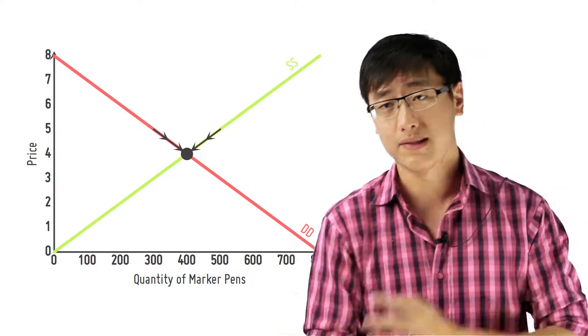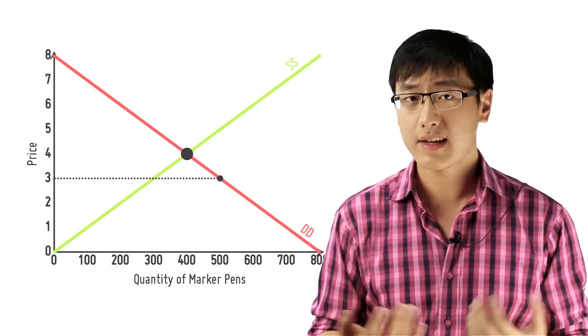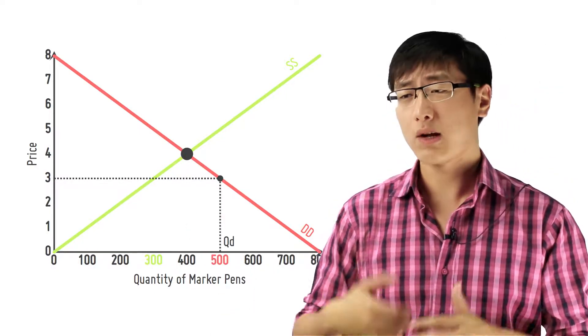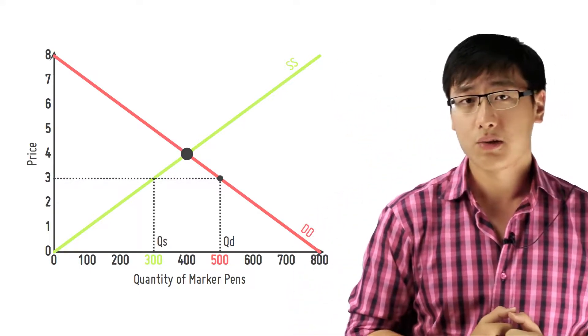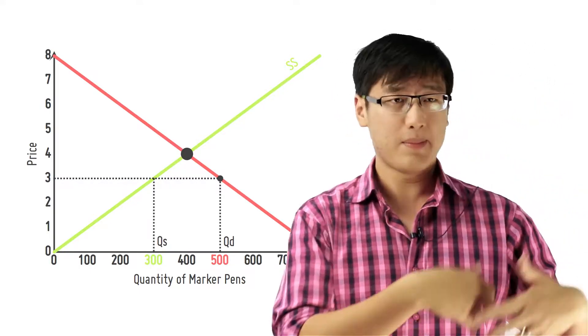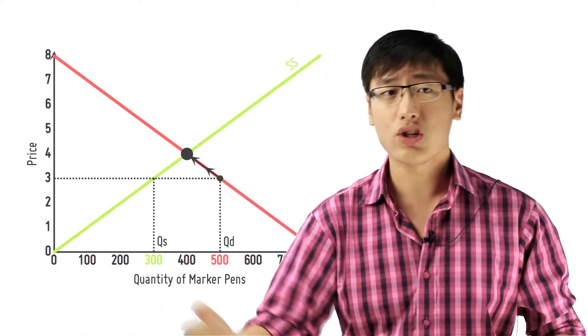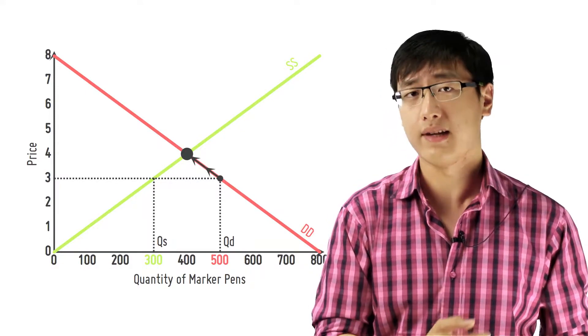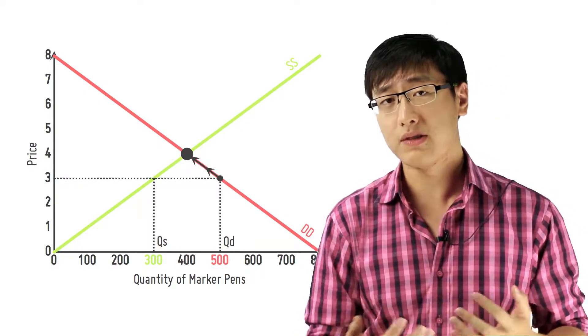If I choose a price that is lower than the equilibrium price, what happens is that the quantity demanded will be higher than the quantity supplied because your producers, they're not willing to produce that much more because the price is too low. But the consumers, they want to consume a lot more. So eventually, your producers get a signal and they say, we will increase the price and we will increase the quantity produced.